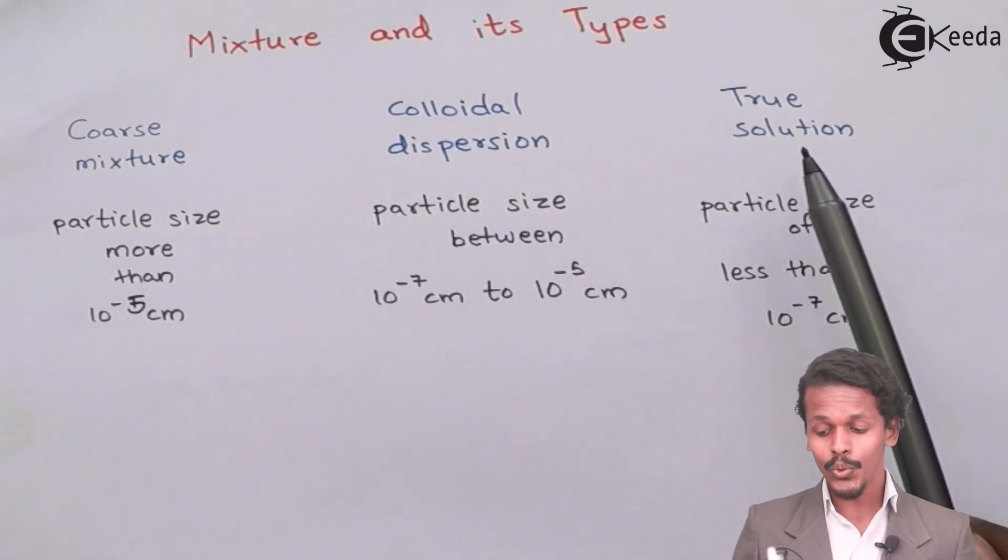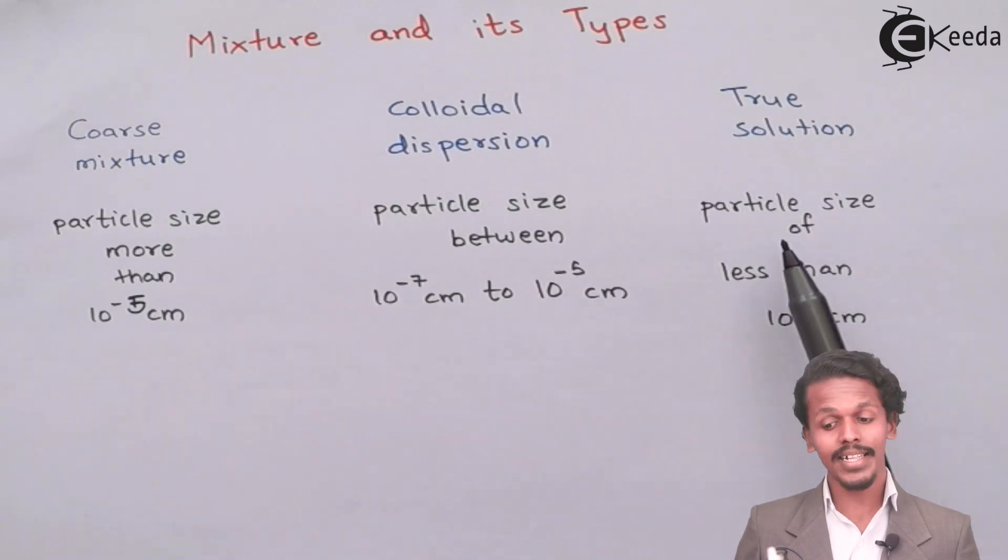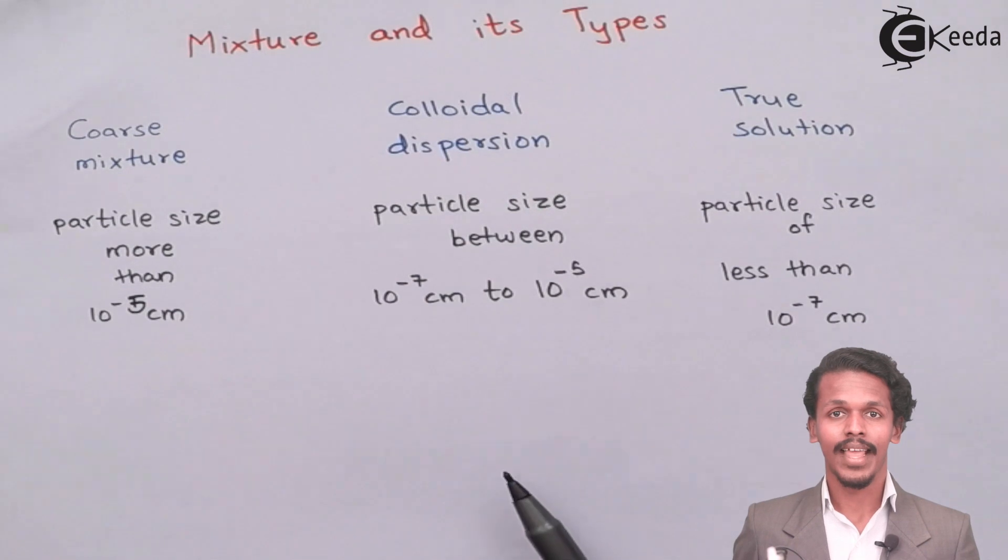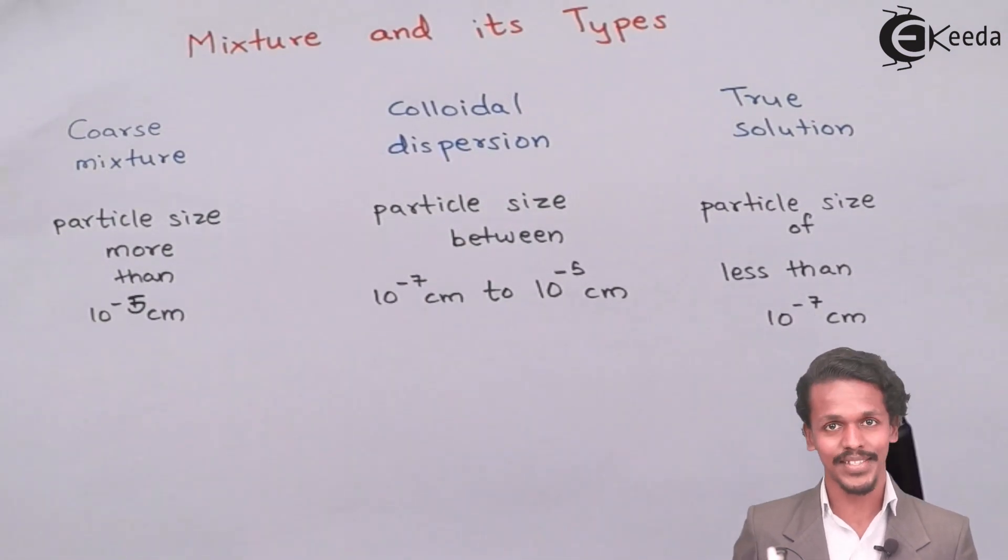And the last one is True Solution, in which they have the particle size of less than 10 raised to minus 7 cm. It means this kind of particle are not visible for a human through their naked eye. And the main chapter that we are going to learn is about True Solution itself.